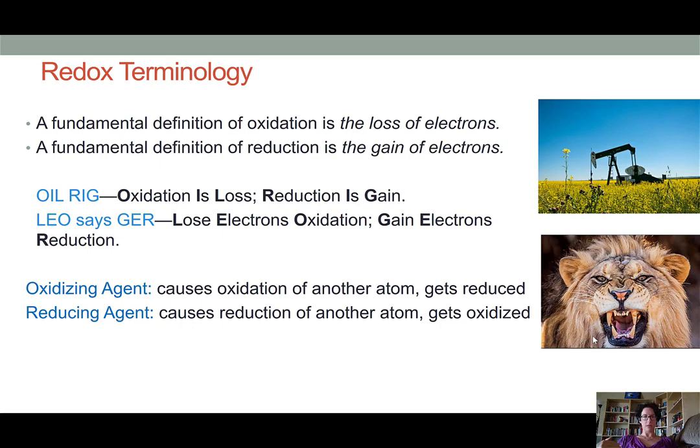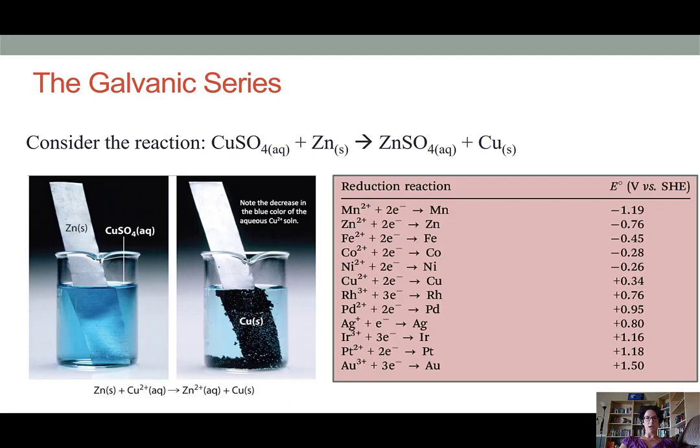Here we see an example of a redox reaction between copper and zinc metals. In this reaction, we begin with copper sulfate, where the copper exists as copper-2 cations. And a piece of elemental zinc is added into a solution containing that copper sulfate. After the reaction is allowed to occur, we end up with the products of elemental copper, and now the zinc is in its zinc-2-plus ionic form.